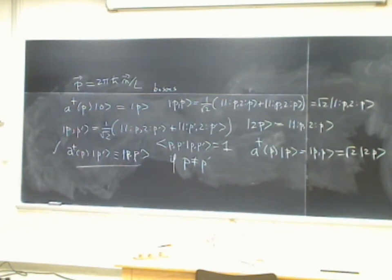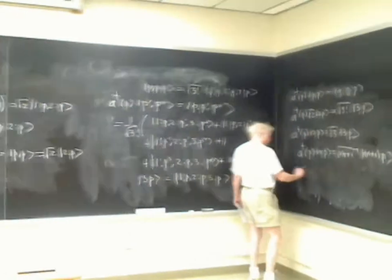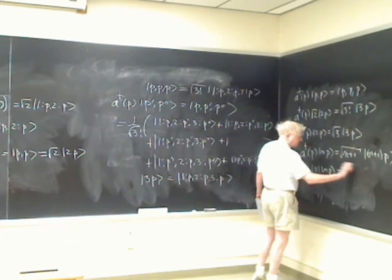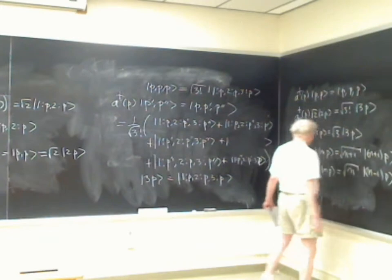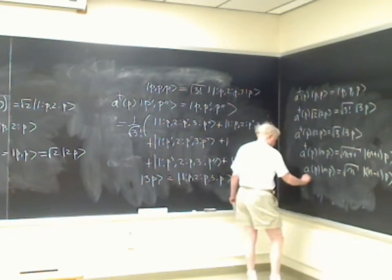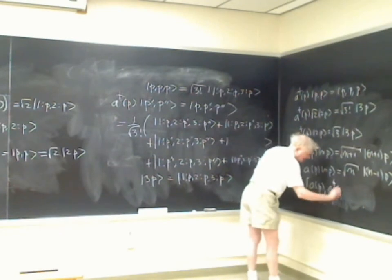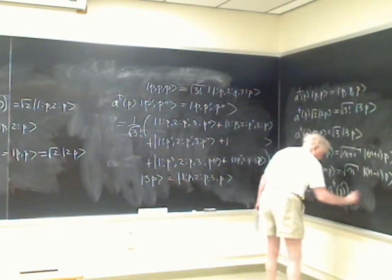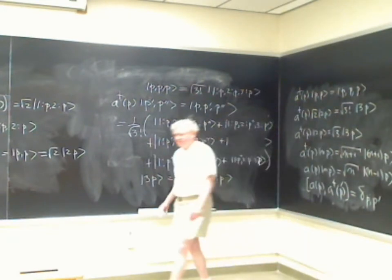Doing this infinitely many times, you eventually get A†(P) on the state |NP⟩ equals √(N+1) times the state |(N+1)P⟩. By similar arguments, A(P) on the state |(N+1)P⟩ gives √(N+1)|NP⟩. And we get the commutation relation [A(P), A†(P')] = δ(P, P'). That's the story for bosons.